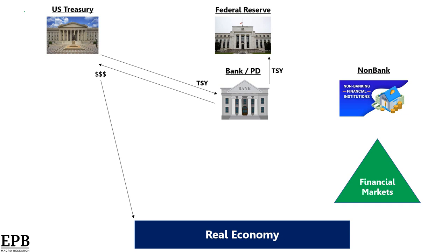Now if the Fed buys Treasuries from the bank, the transaction is nothing more than an asset swap. The bank gives the Fed a Treasury, but the Fed does not give the bank cash. The Fed credits the bank's reserve account held at the Fed, so the reserve account goes up. These reserves don't fit the definition of money because they're not a medium of exchange. You cannot pay your employees with reserves. You can't go to the store and buy a sandwich with reserves. These reserves can be used, however, to satisfy various regulatory and reserve requirements, in essence freeing up space for the banks to make more loans into the real economy.